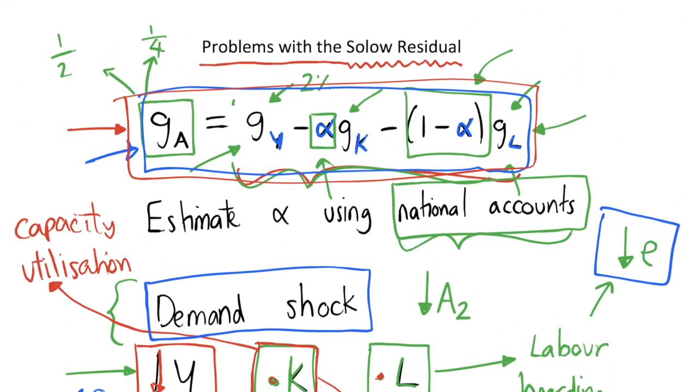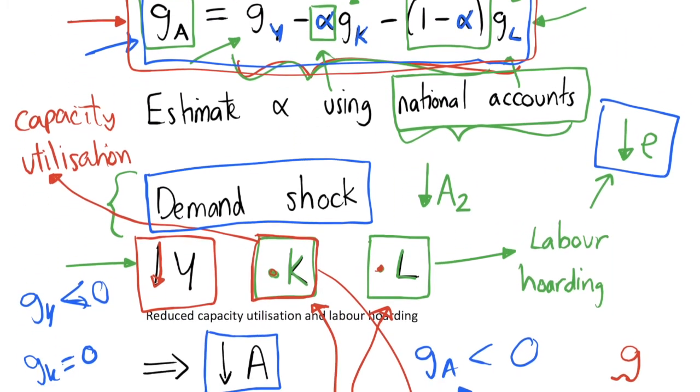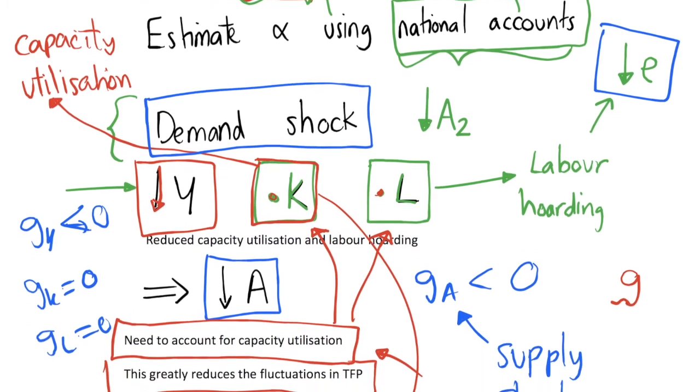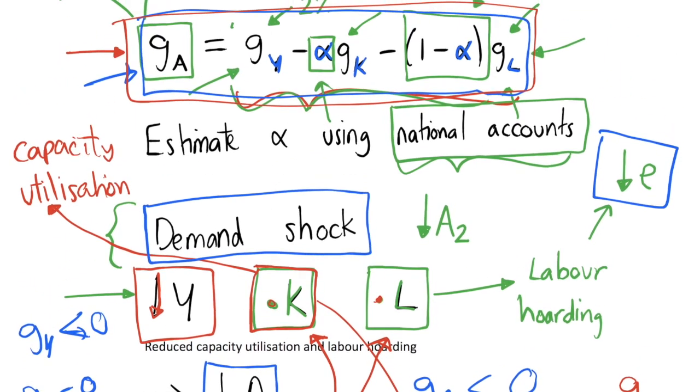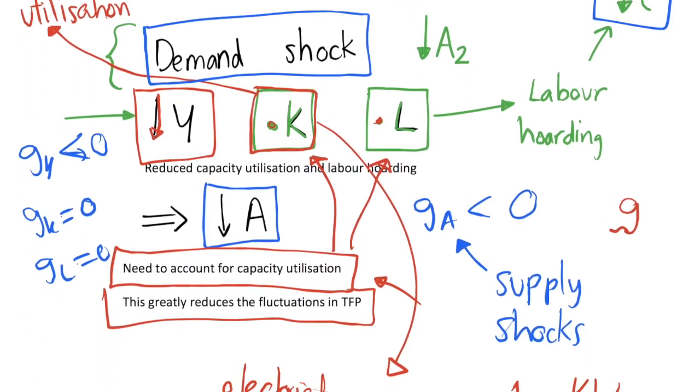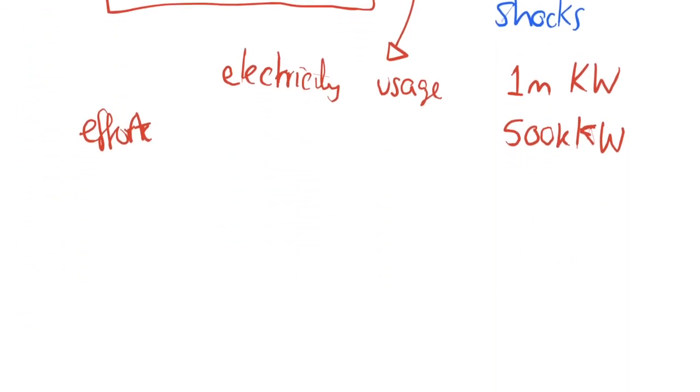But that is a key issue when you're using the Solow residual—that you need to note that it is picking up lots of different shocks. As it is a residual, it's picking up everything that isn't accounted for in the capital stock and in the labor stock. And the capital stock and labor stock don't tell us the whole story of everything, so anything that isn't accounted for by them is picked up in our Solow residual because we have a very simplistic model. That's a lot of things that aren't picked up there.